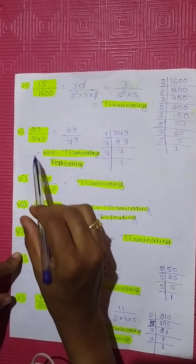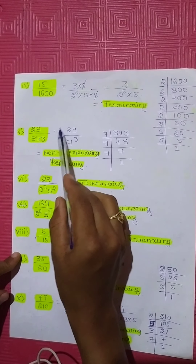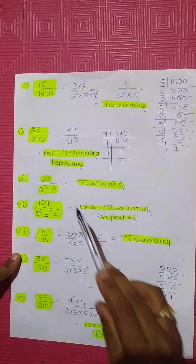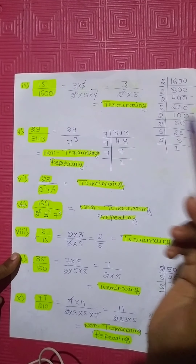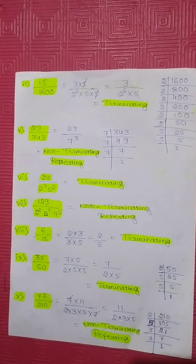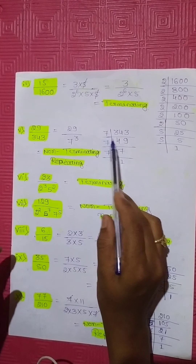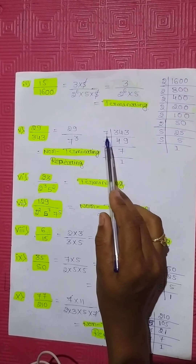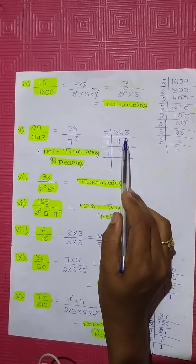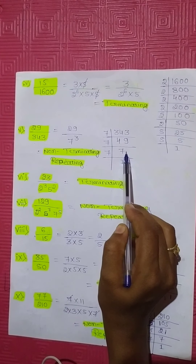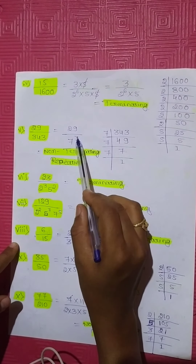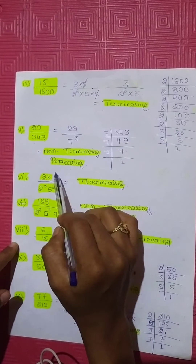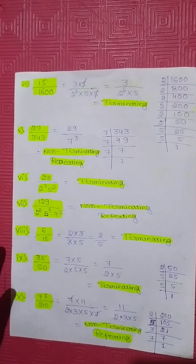Fifth question: 29 divided by 343. 29 is itself a prime number. The denominator 343 can be expressed in prime factorization as 7 to the power of 3. Since the denominator contains 7, this is a non-terminating repeating decimal expansion.